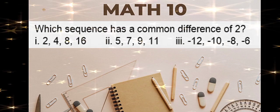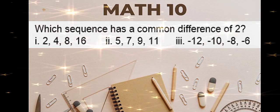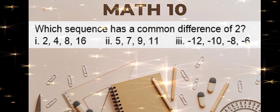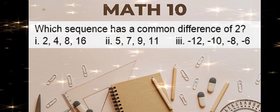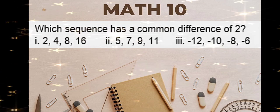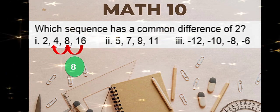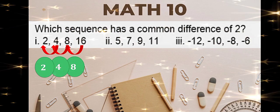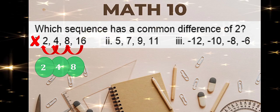Which sequence has a common difference of 2? We will check each given choice. In order to get the common difference, simply subtract the last term by the previous term. That is 16 minus 8 is 8, 8 minus 4 is 4, then 4 minus 2 is 2. From here, there is no common difference, so number 1 is not the answer.